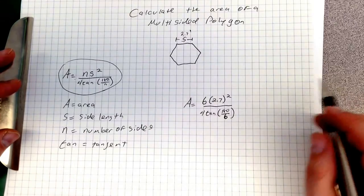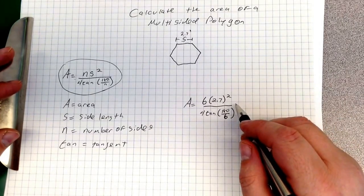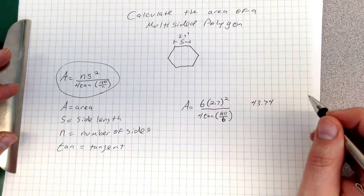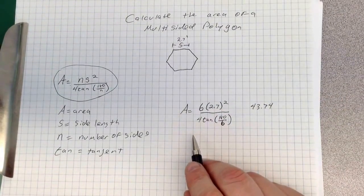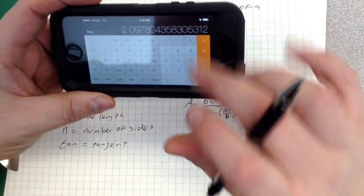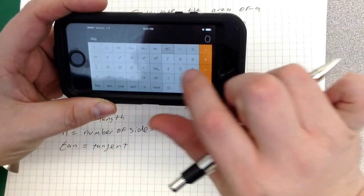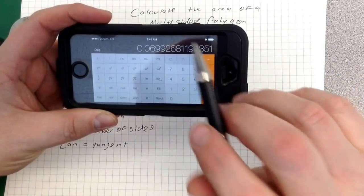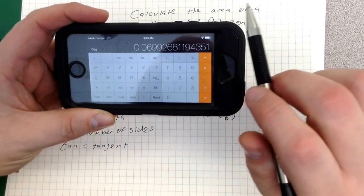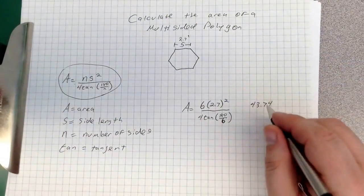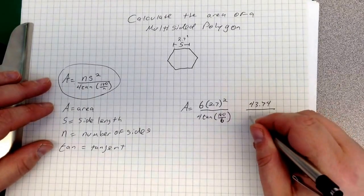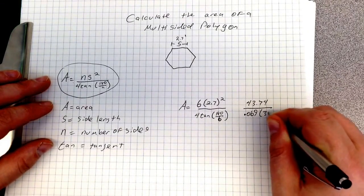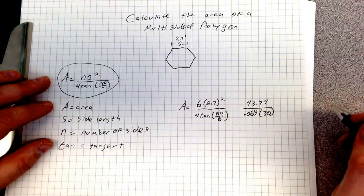Now when I figure this out, 2.7 squared times 6, I am left with 43.74. When I hit 4 tan, let me clear this out so you can see where this number is coming from - 4 tangent gives me 0.069. So down below, I am left with 0.069 times 30, because 180 divided by 6 is 30.